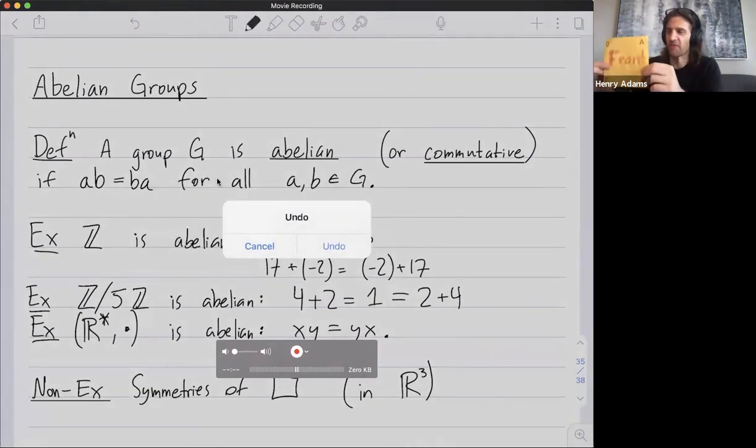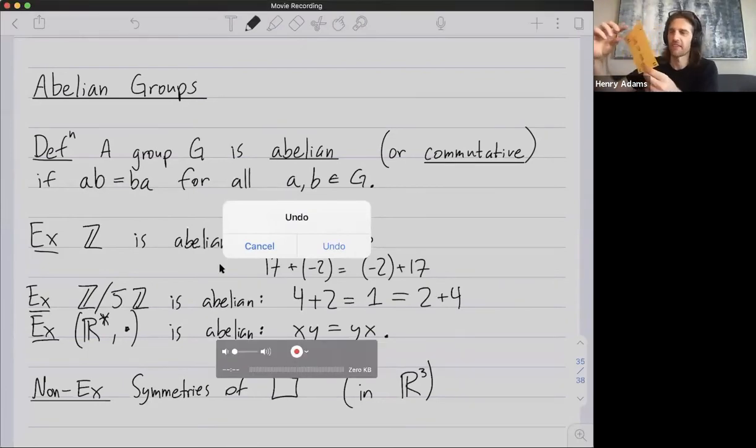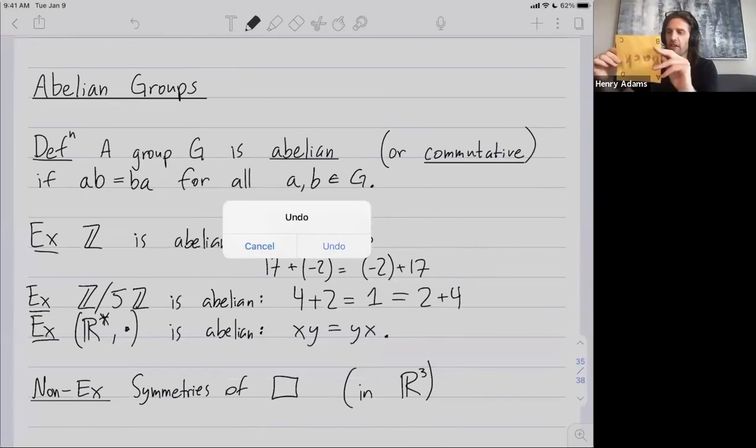By contrast, if you do the flip and then the 90 degree rotation, the B in back ends up on bottom. So if I do the flip and then the 90 degree rotation, the B in back ends up on bottom. So you can see that that's a choice of a and b where a times b is not equal to b times a.